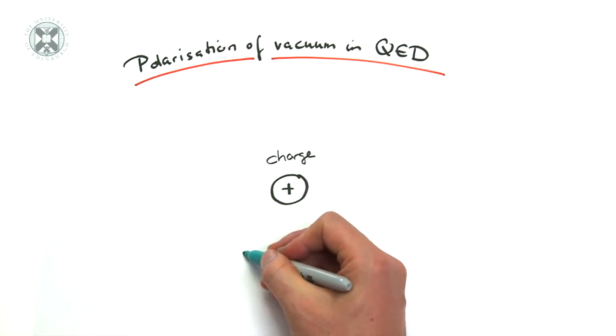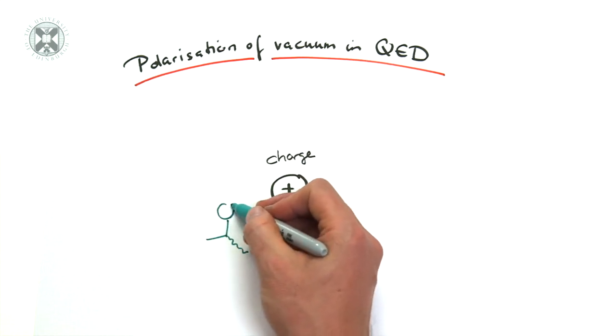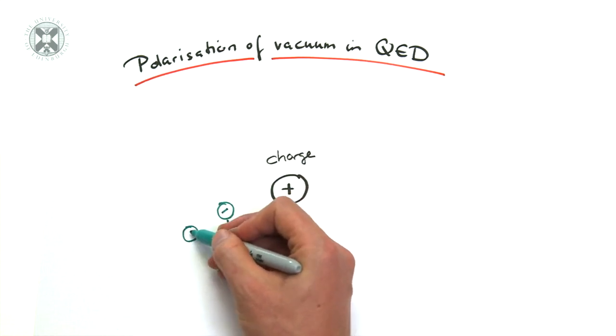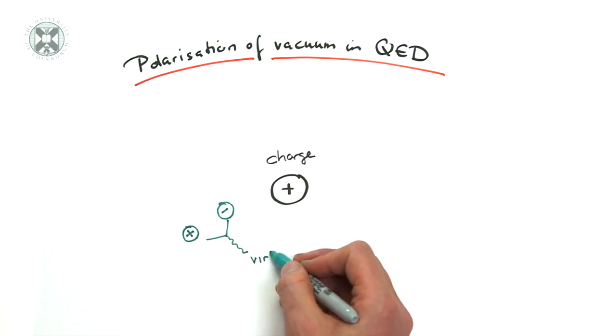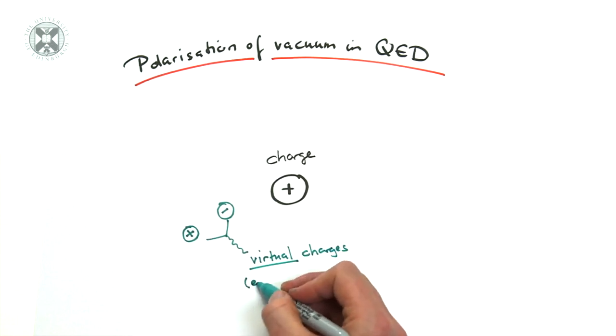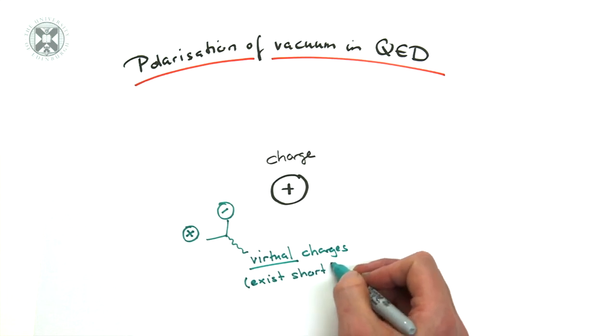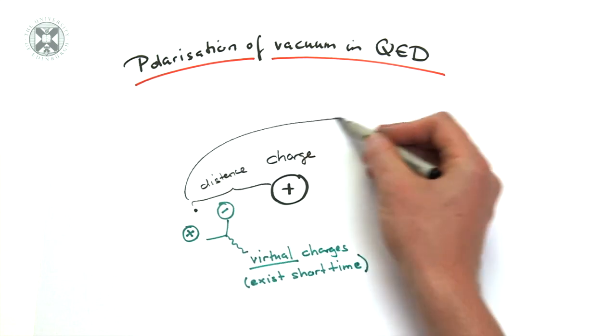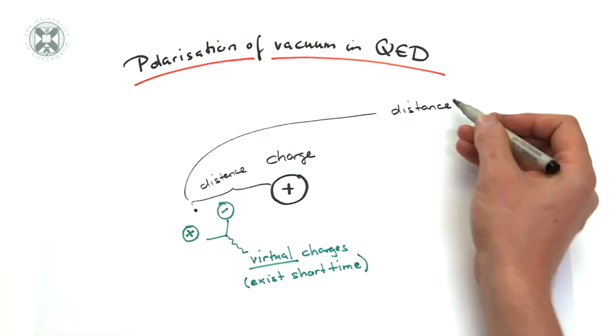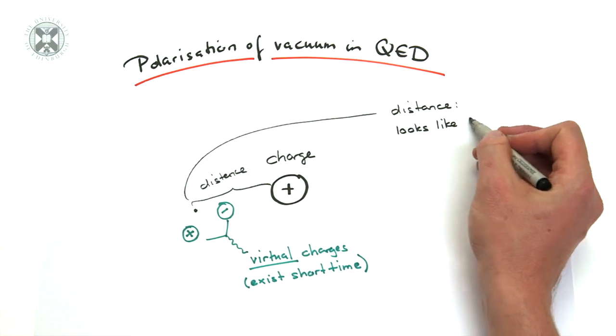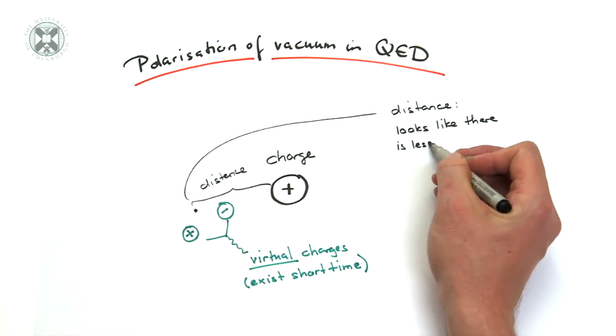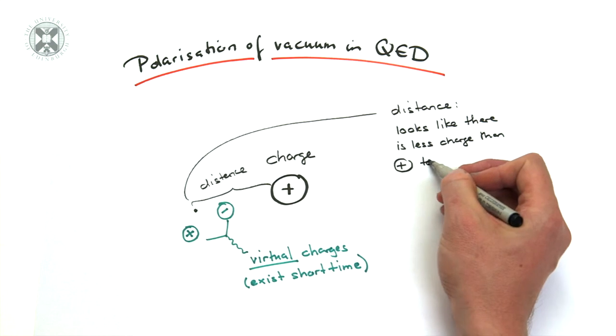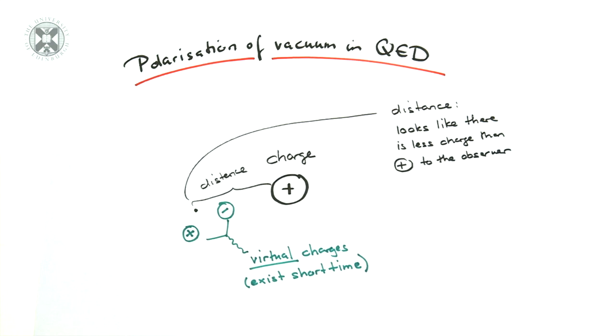Imagine a charge placed into the vacuum. If a virtual pair of opposite charges is created from the vacuum, then the initial charge will attract the one of opposite charge. This is analogous to a polarized medium. The net effect is that from a distance it will look like there is less charge. To see this we place a charge into such a configuration and we see that the virtual charges counteract the effect of the initial charge. Therefore the electromagnetic force gets stronger at short distances due to quantum effects.